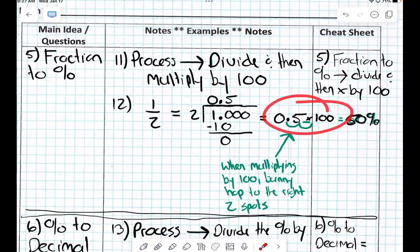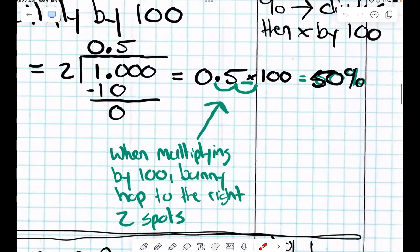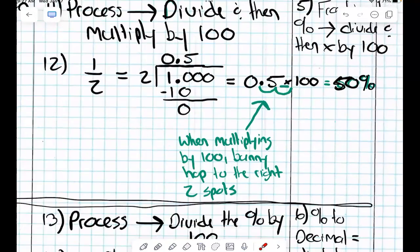and really, instead of multiplying by 100, since we know 100 is the power of 10, what do we do? What's the easier? When you're multiplying, which way do you do bunny hops? How many spots? Two. Good job. Let's keep going.